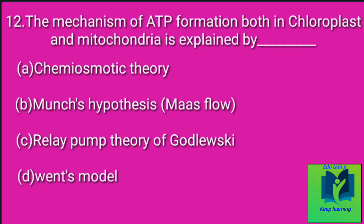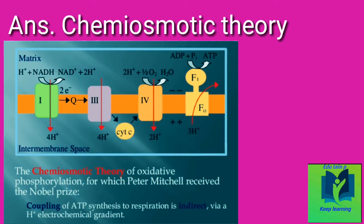The mechanism of ATP formation both in chloroplast and mitochondria is explained by: Option A: Chemiosmotic theory. Option B: Munch hypothesis. Option C: Relay pump theory of Gott-Levsky. Option D: Colodyne-Ventz model. Answer: Chemiosmotic theory.